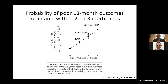Barbara Schmidt's caffeine trial data on probability of poor neurodevelopmental outcome at 18 months shows that if you have BPD you have worse outcomes, and if you have brain injury such as IVH or ROP, outcomes progressively worsen up to about 90 percent. This makes the important point that to improve outcomes we have to decrease injuries — specifically BPD, NEC, brain injury, and ROP.